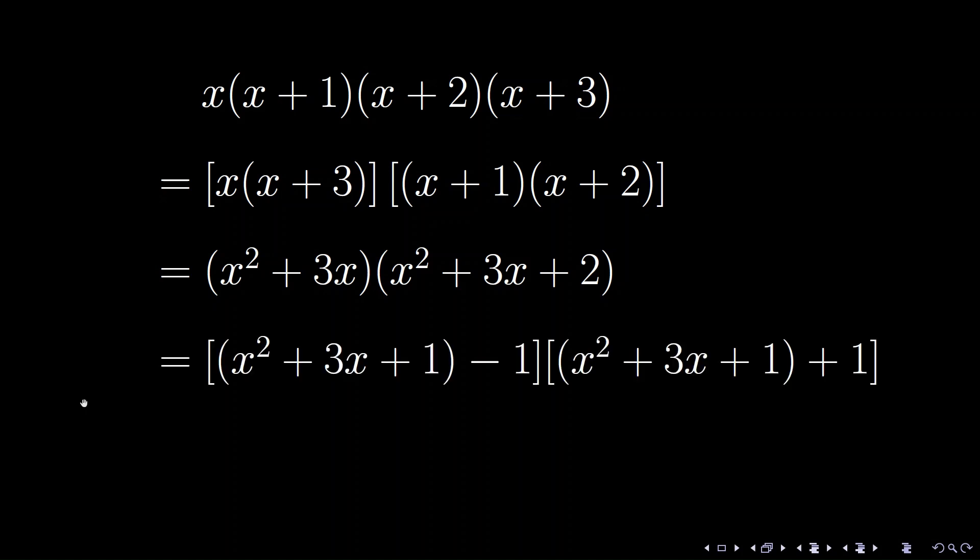The average of the two quadratic polynomials is x squared plus 3x plus 1. So the first factor can be rewritten as x squared plus 3x plus 1 minus 1, and the second part becomes x squared plus 3x plus 1 plus 1. This is a type of a minus b times a plus b. It ends up with x squared plus 3x plus 1 squared minus 1 squared.